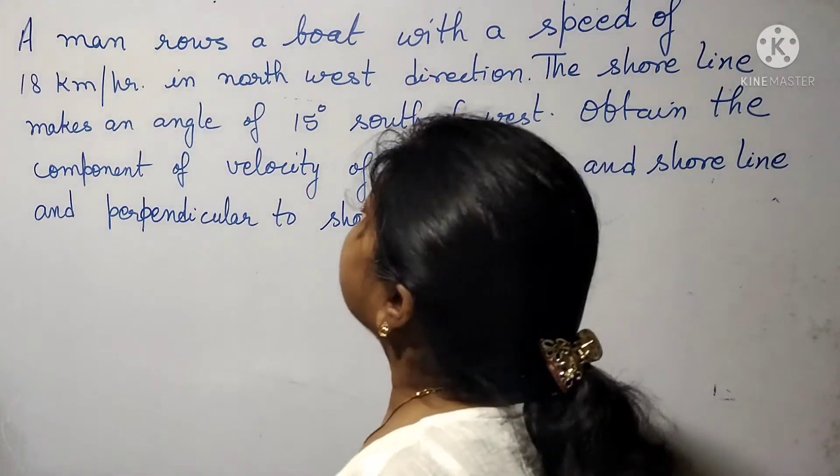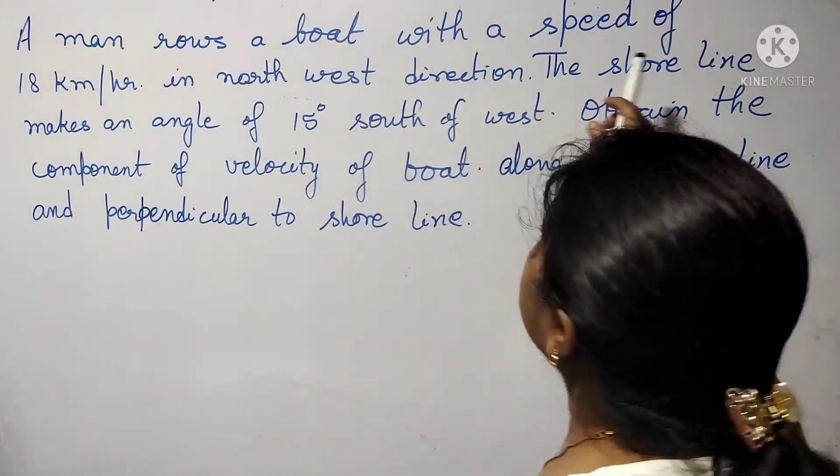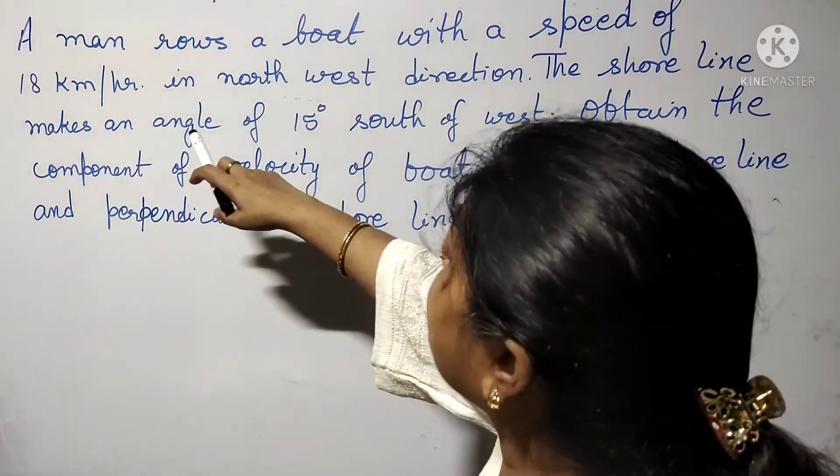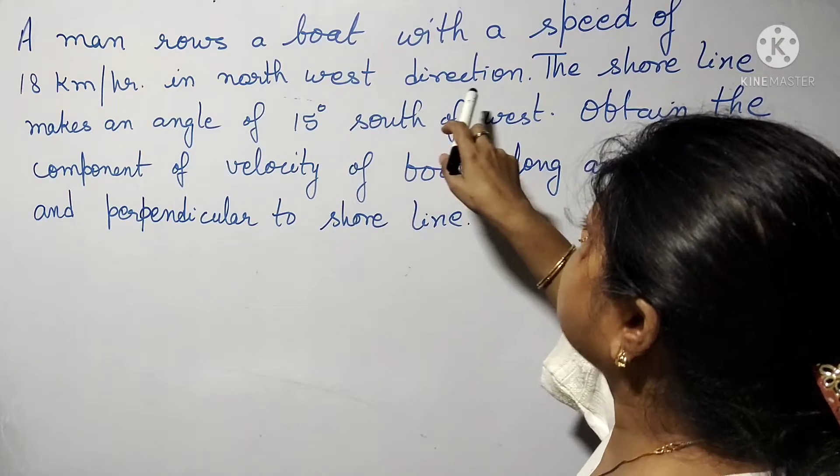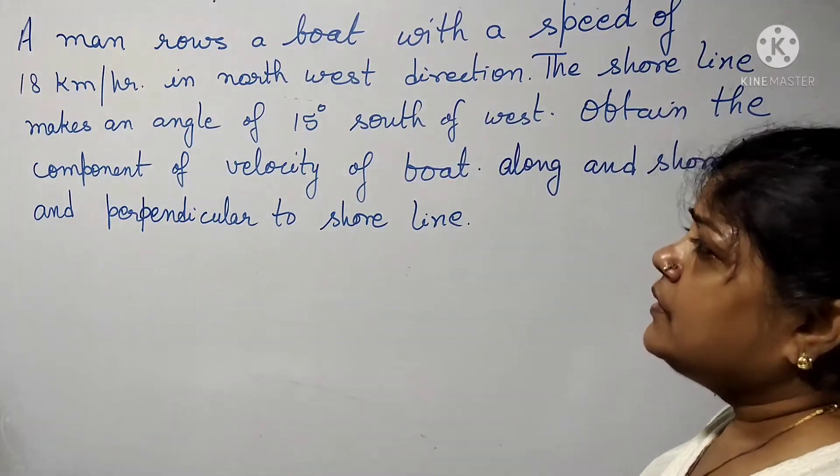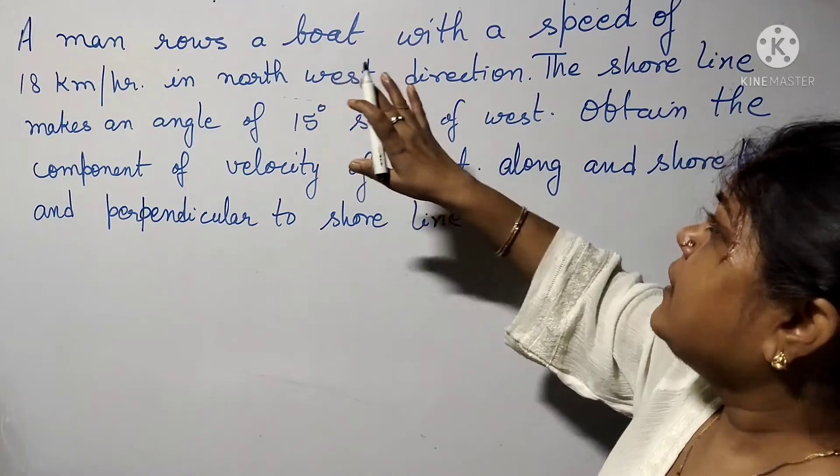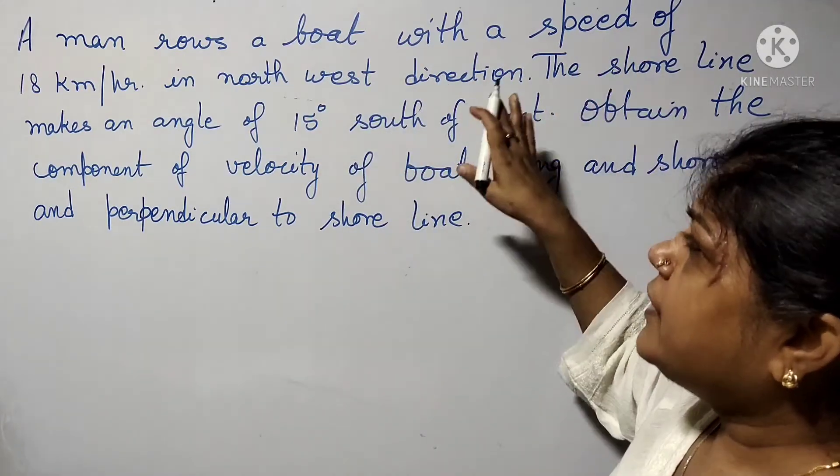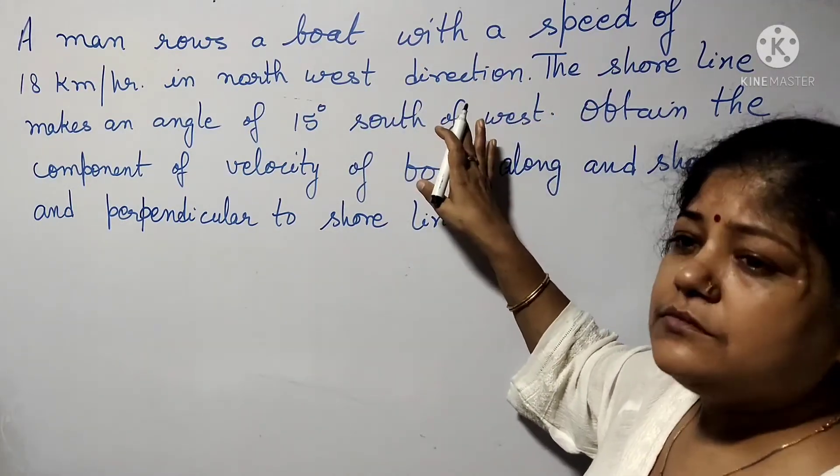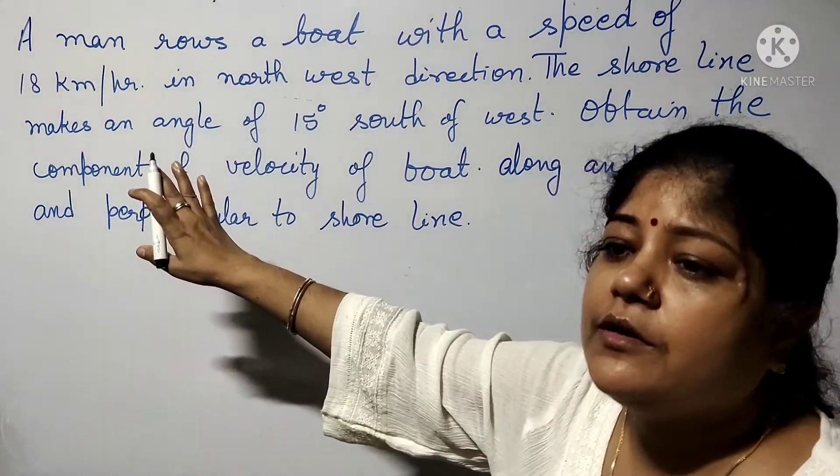We have the question in this way: A man rows a boat with a speed of 18 km per hour in the northwest direction. Just study this question one by one. A man goes northwest direction with a speed of 18 km per hour.